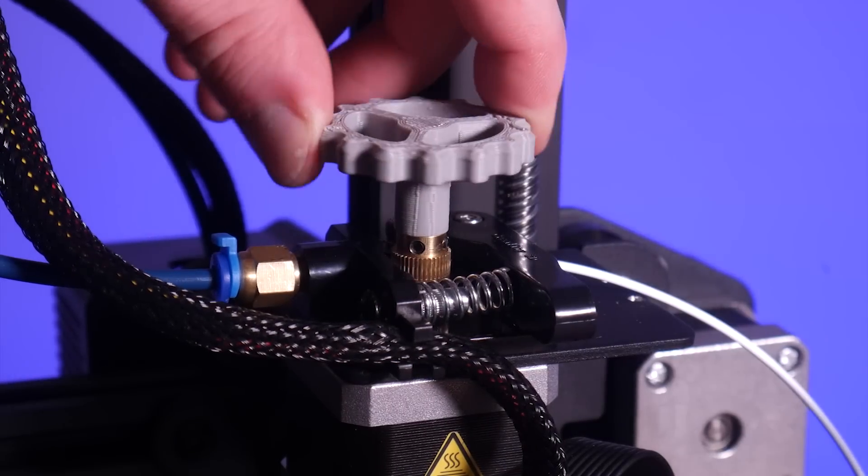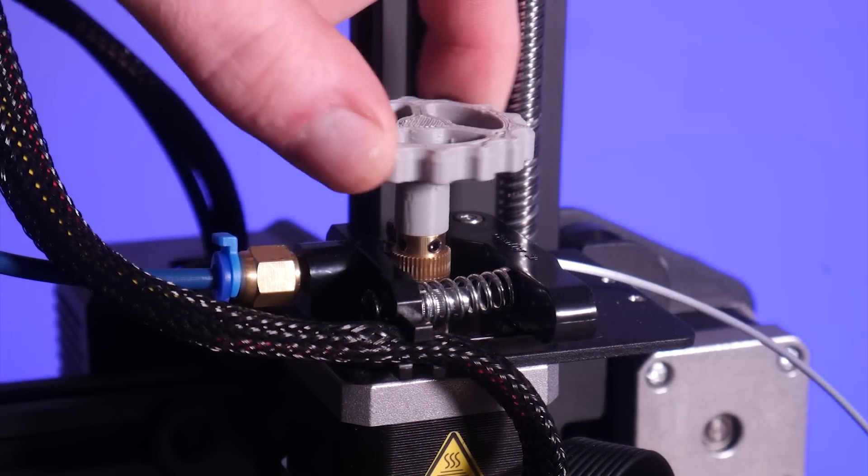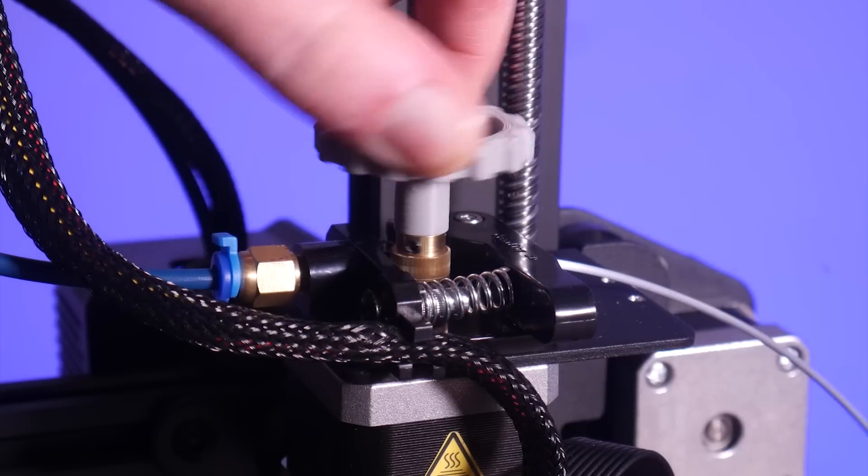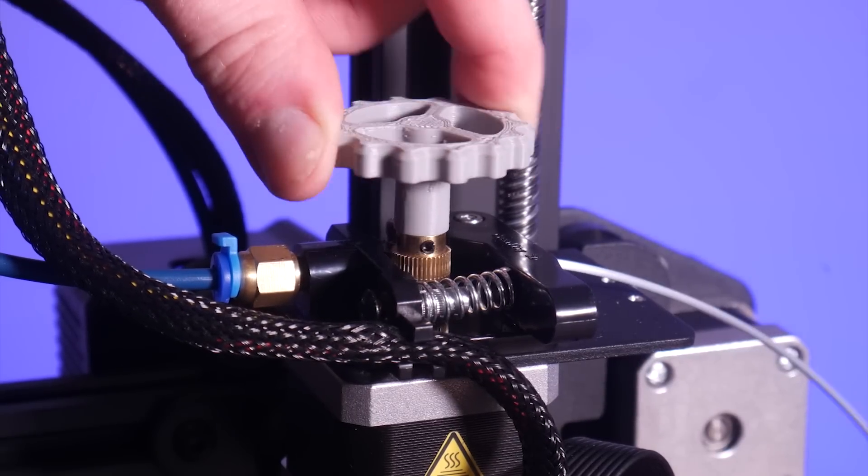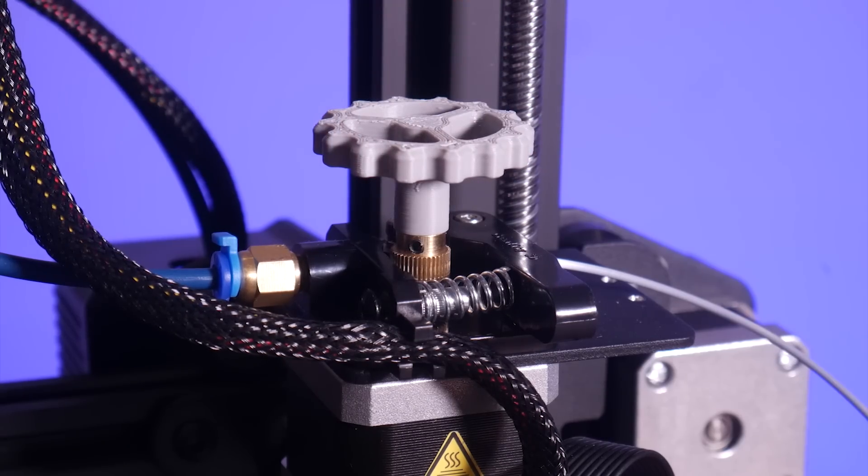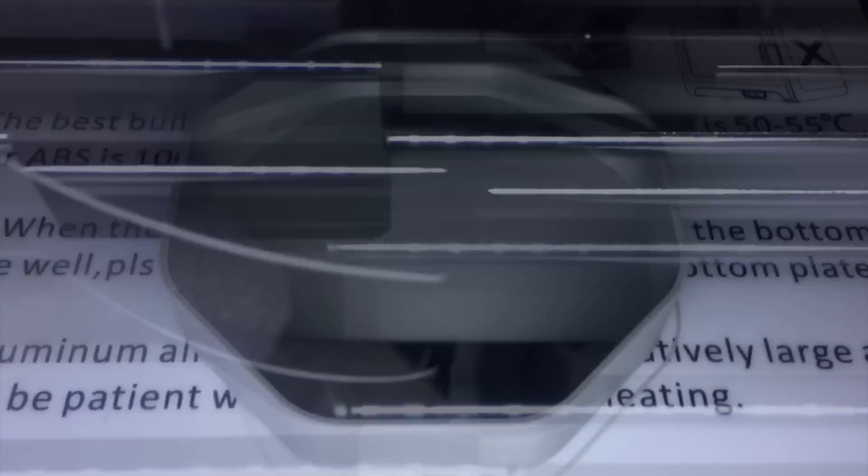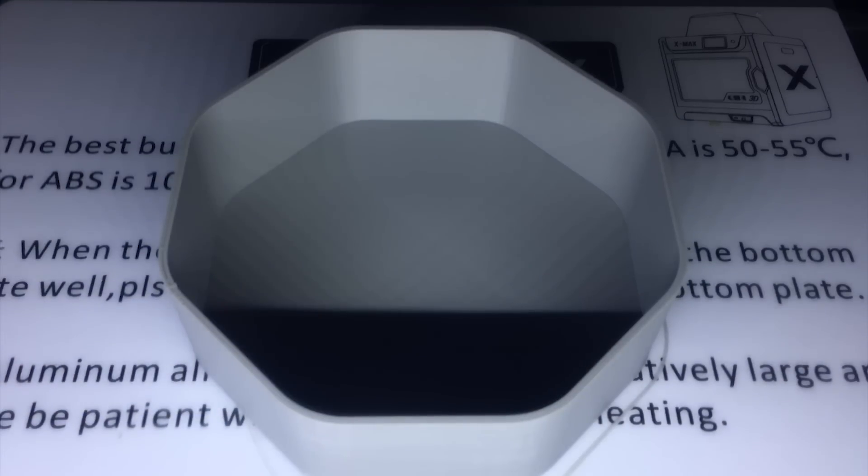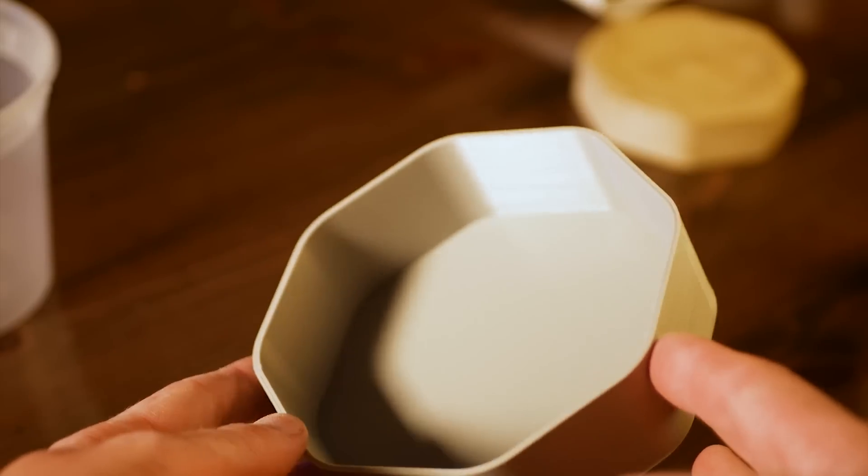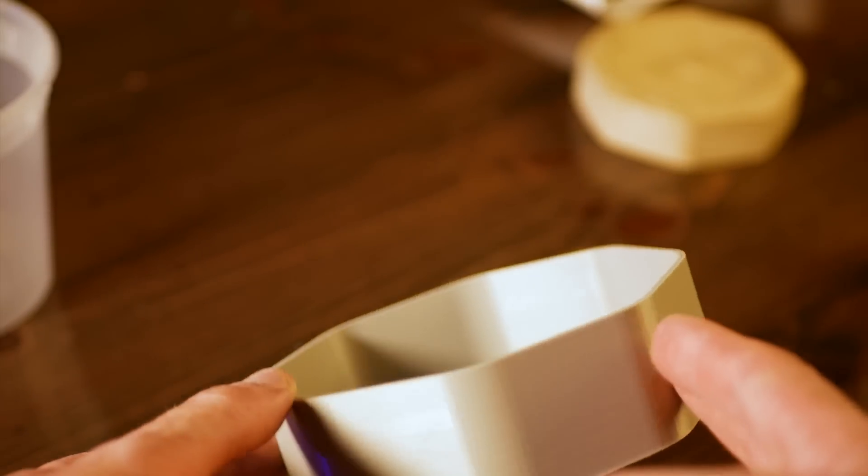I printed a handful of functional prints to capitalize on the strength of ABS, one of which was a few extruder knobs that turned out great and should be more than strong enough. I also printed a small casting box for a silicone mold. You can really see the consistent extrusion and accurate z-axis by the walls on this print. Great finish quality here.